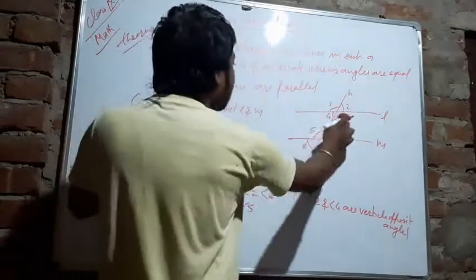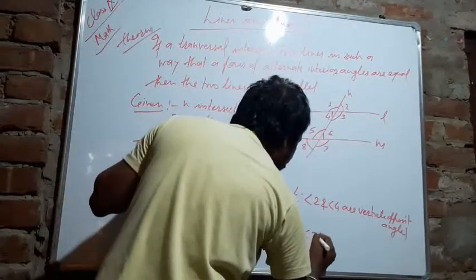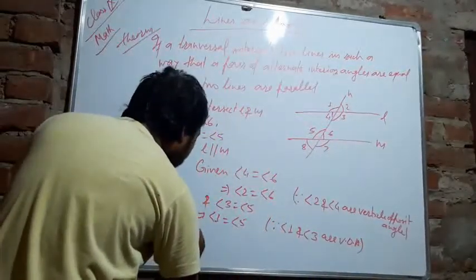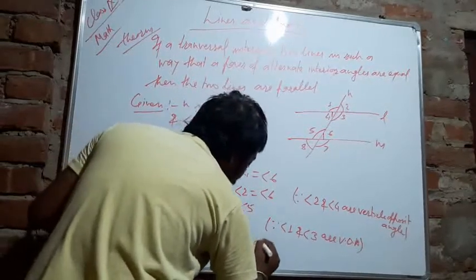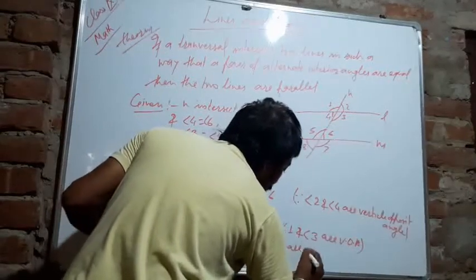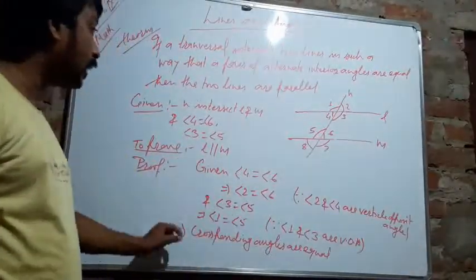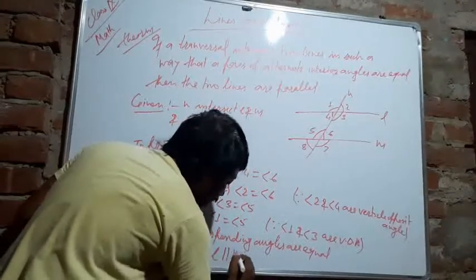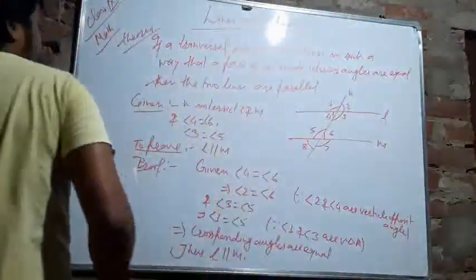This implies that corresponding angles are equal. When corresponding angles are equal, and you have two lines, those lines are parallel. This implies L is parallel to M.